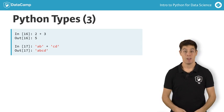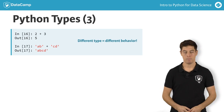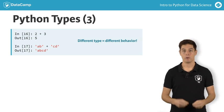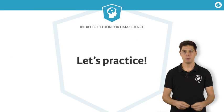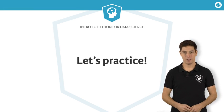This is a general principle. How the code behaves depends on the types you're working with. In the exercises that follow, you will create your first variables and experiment with some of Python's data types. I'll see you in the next video to explain all about lists.